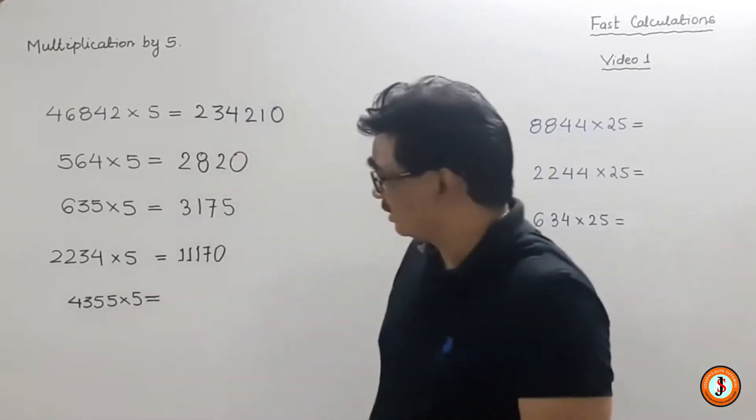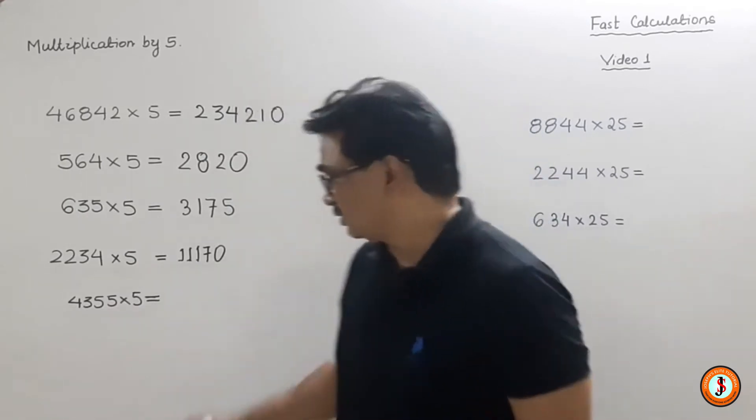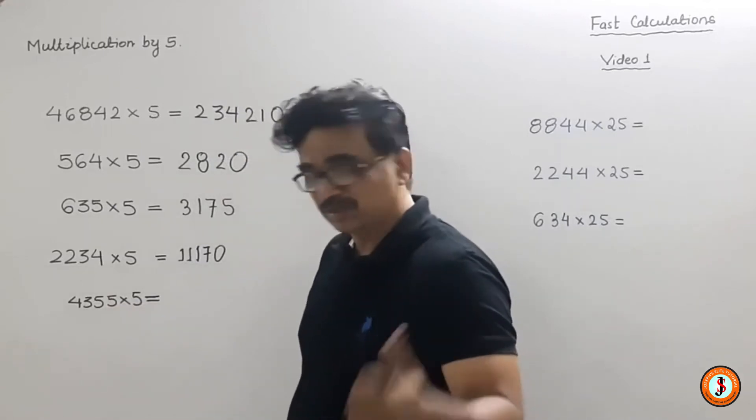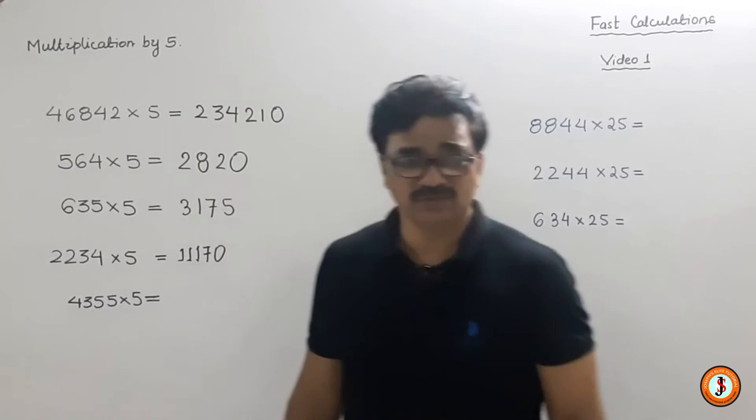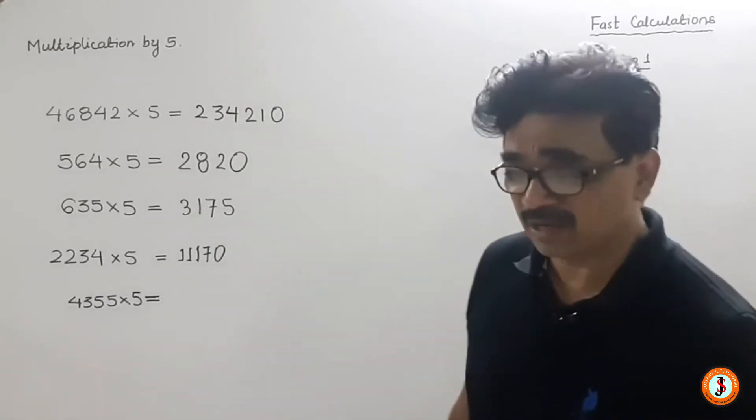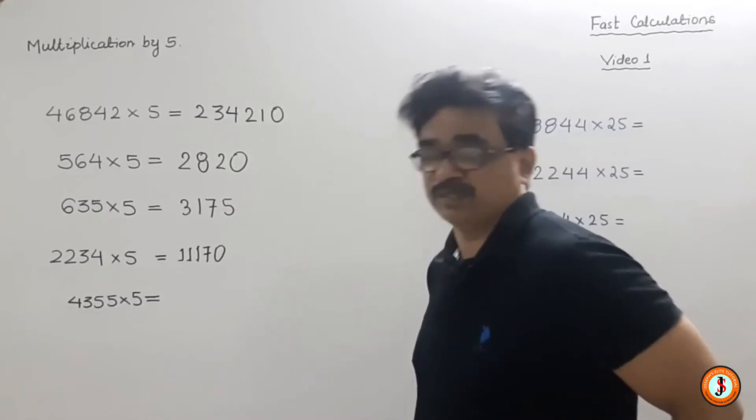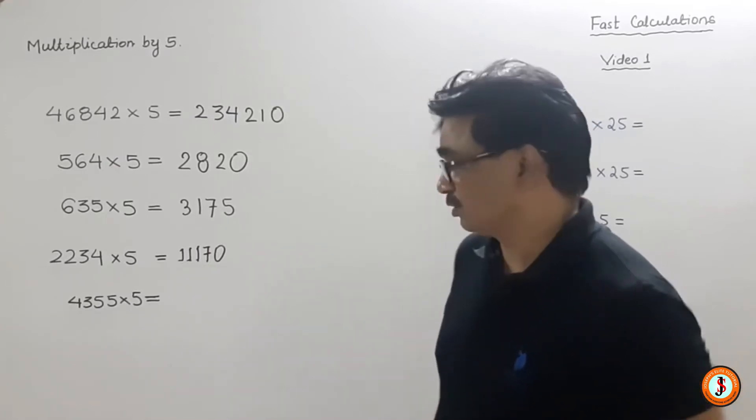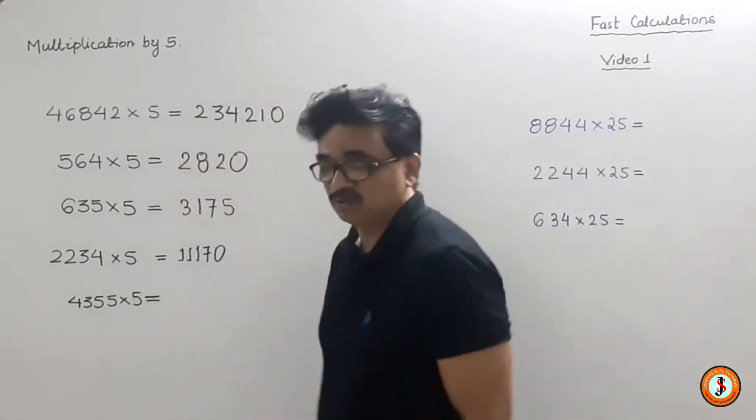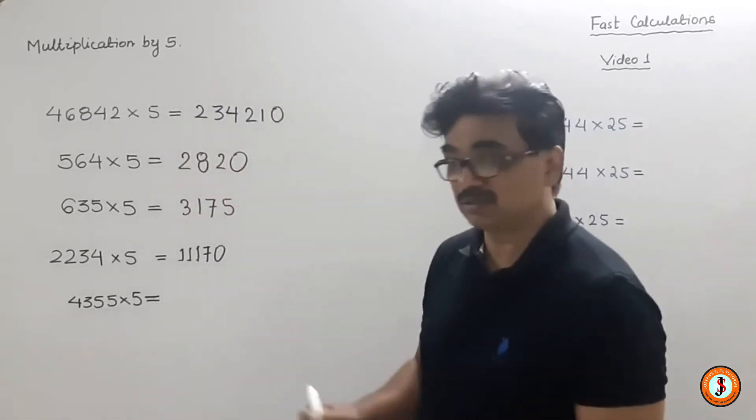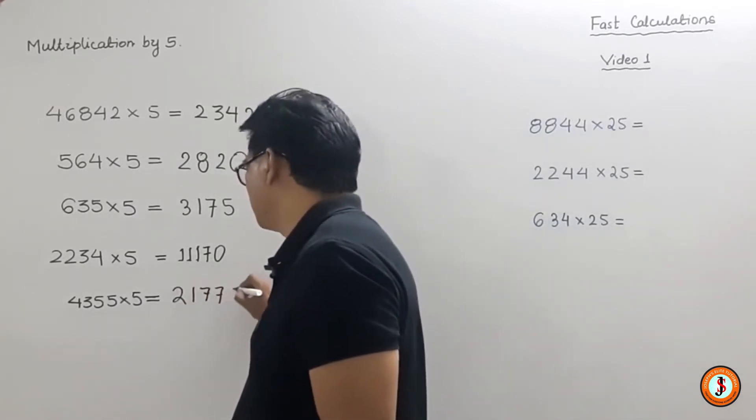Now we'll halve 3300, so half of 3300 is 1650. Then half of 55 - we can halve 54 to get 27, so we get 2170.5, which is 21775. That is the answer.